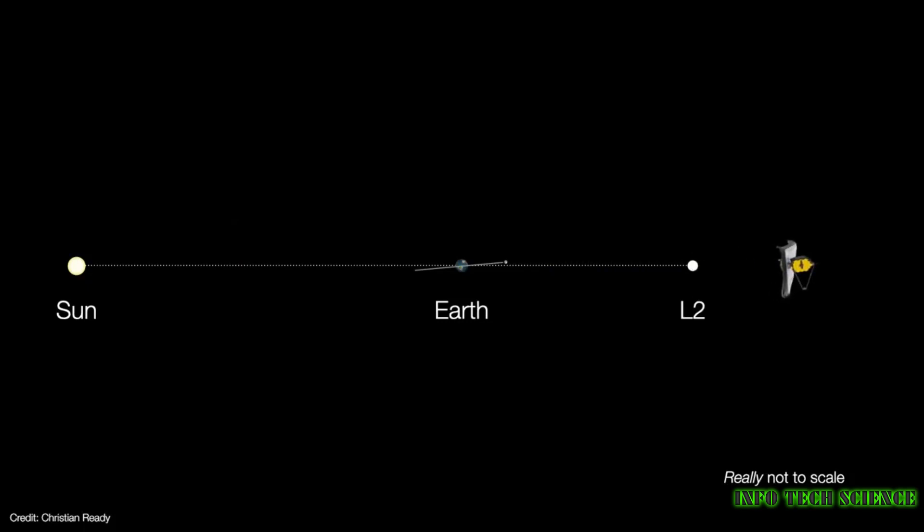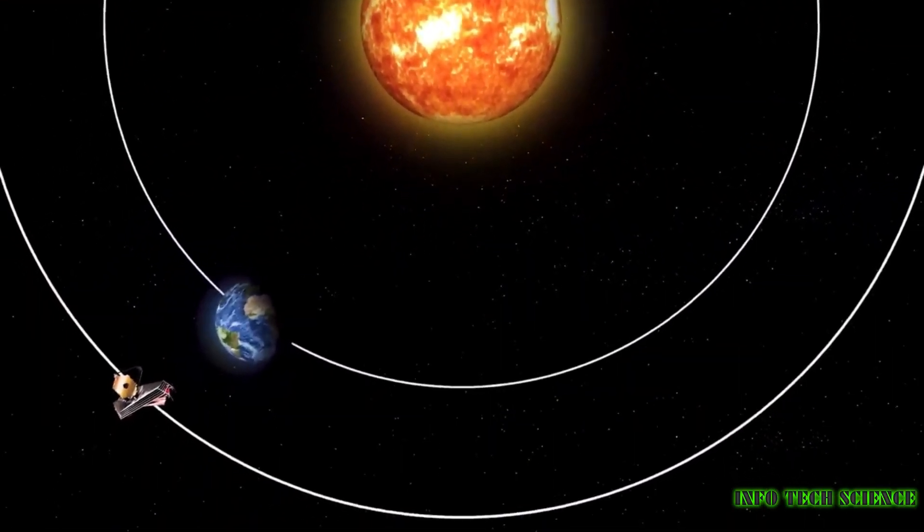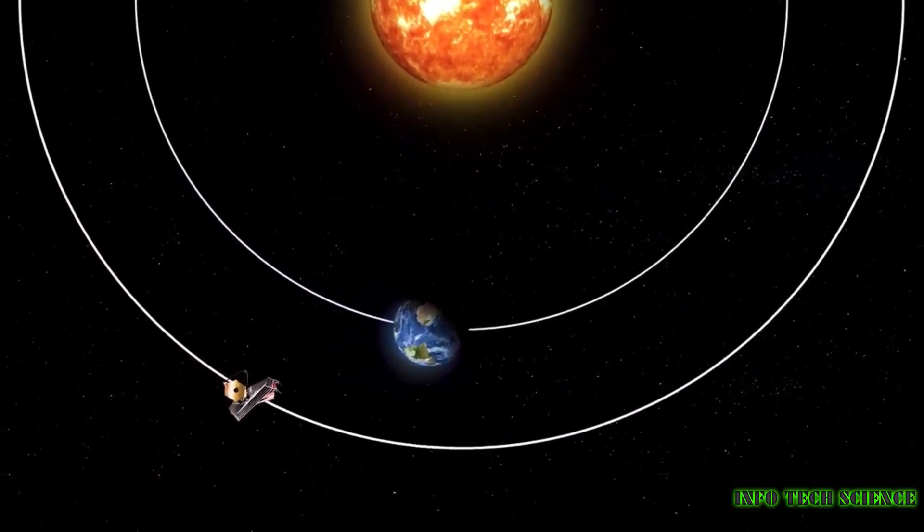Now, let's study JWST's orbit. While it stays close to L2, it's not completely stationary. In fact, it performs a beautiful orbital dance.